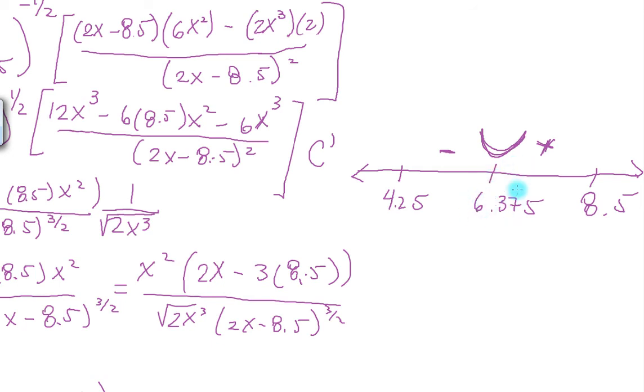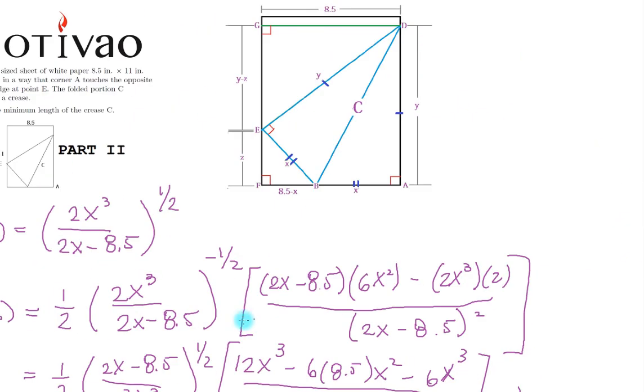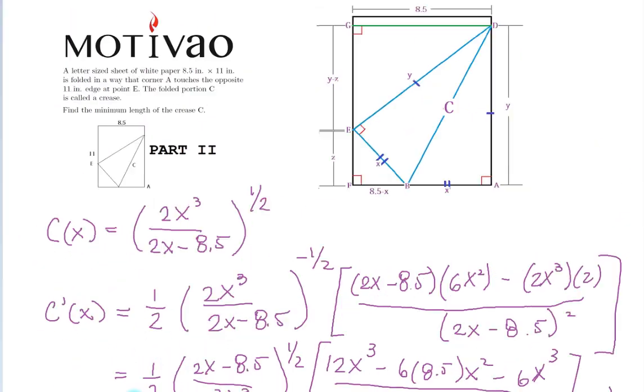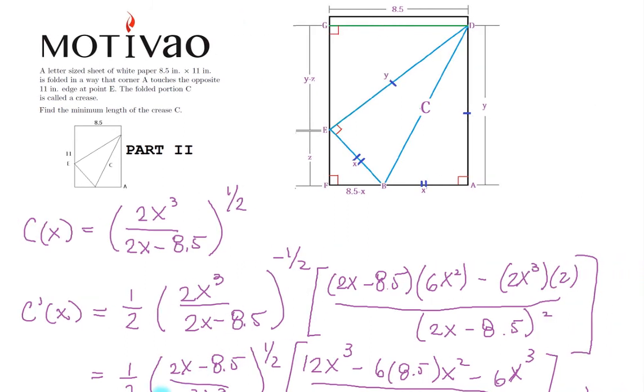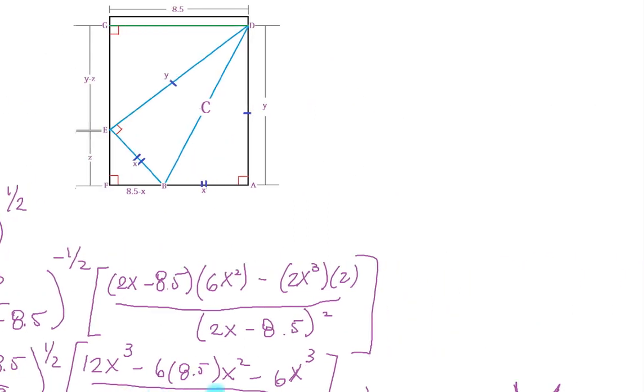And that's our minimum x. But what we want to find is the minimum length, not the minimum value of x. So we need to plug in that value into this function, c of x, to find the minimum length.